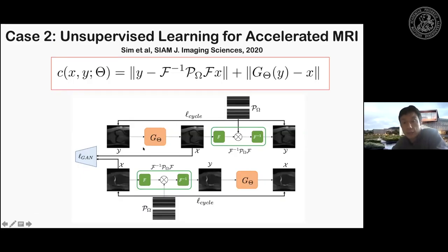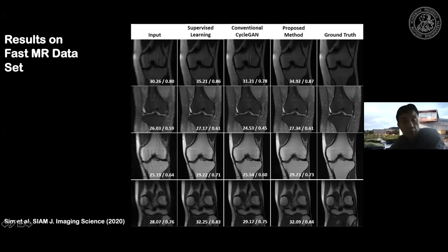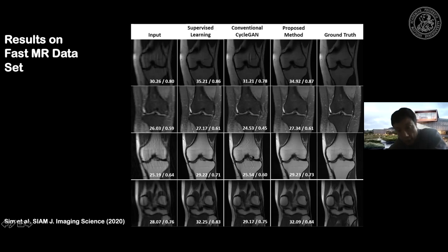The second application is compressed sensing MRI. The forward operator — the downsampling pattern and Fourier transform — is completely known, so we only need one generator and one discriminator. The result on the fastMRI dataset from NYU shows four-times accelerated imaging. The right column is the ground-truth, the second column is supervised training, the conventional cycle GAN shows limiting aliasing artifacts, but our approach can completely remove these artifacts and achieves quality similar to the supervised learning approach in terms of both visual quality and quantitative metrics.